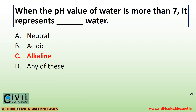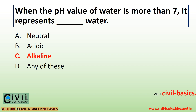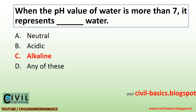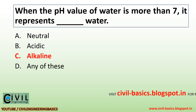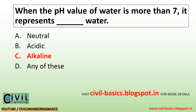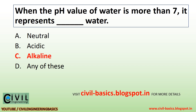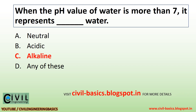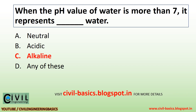When the pH value of water is more than 7, it represents alkaline water.